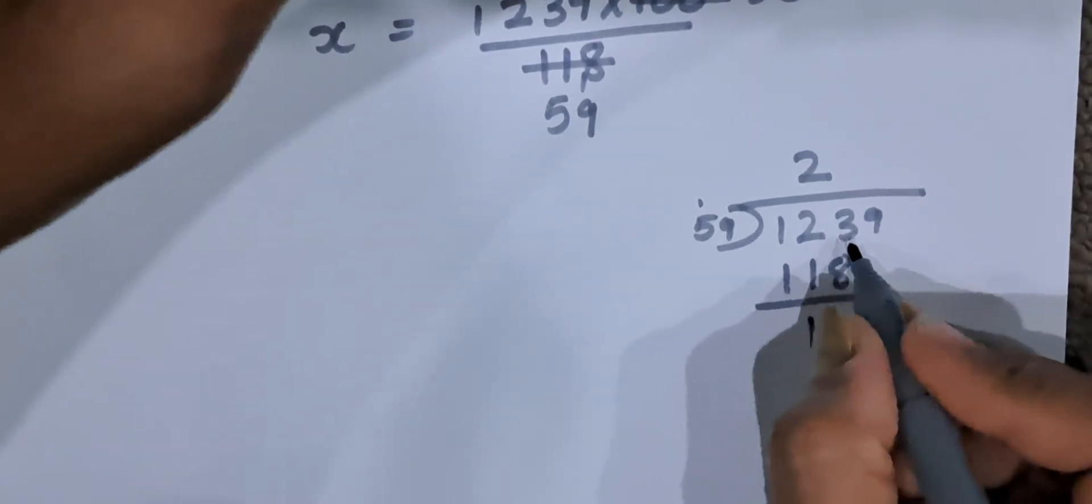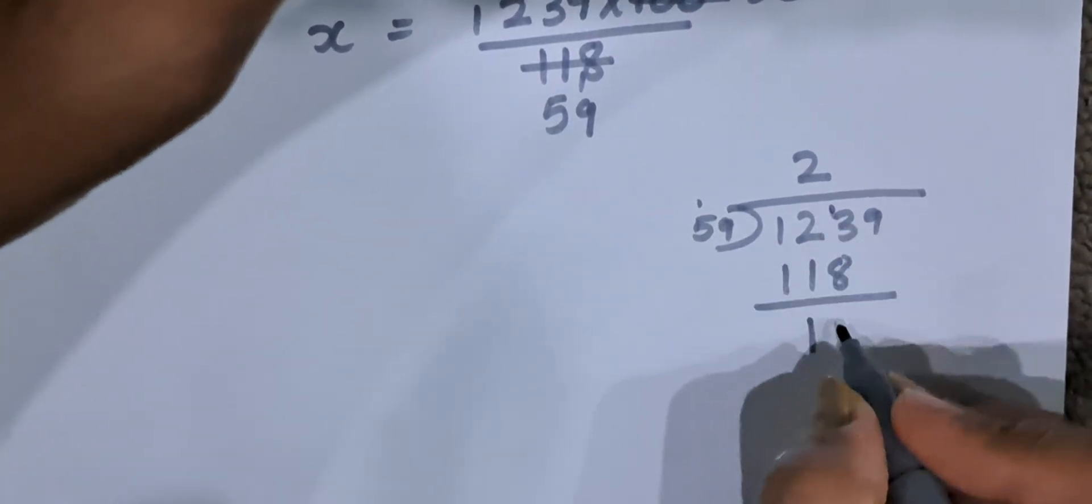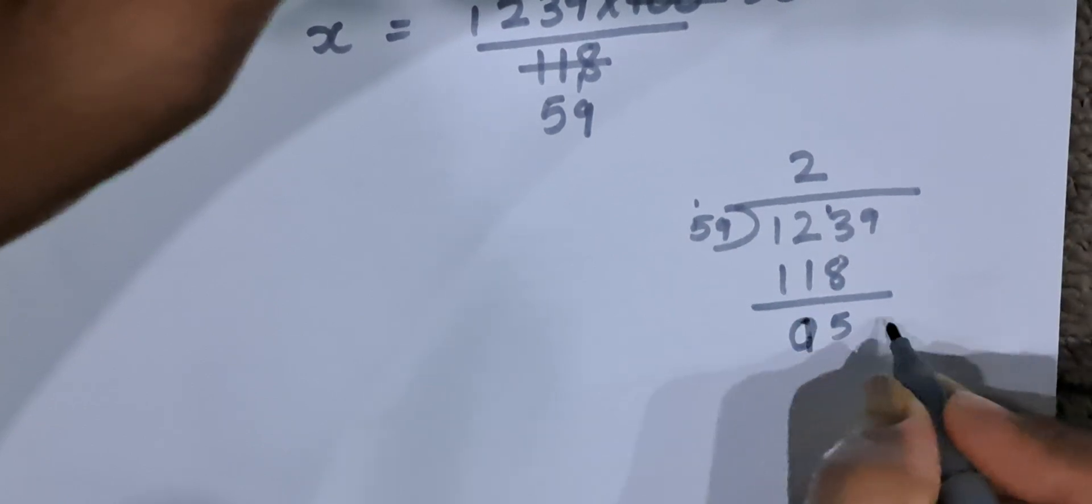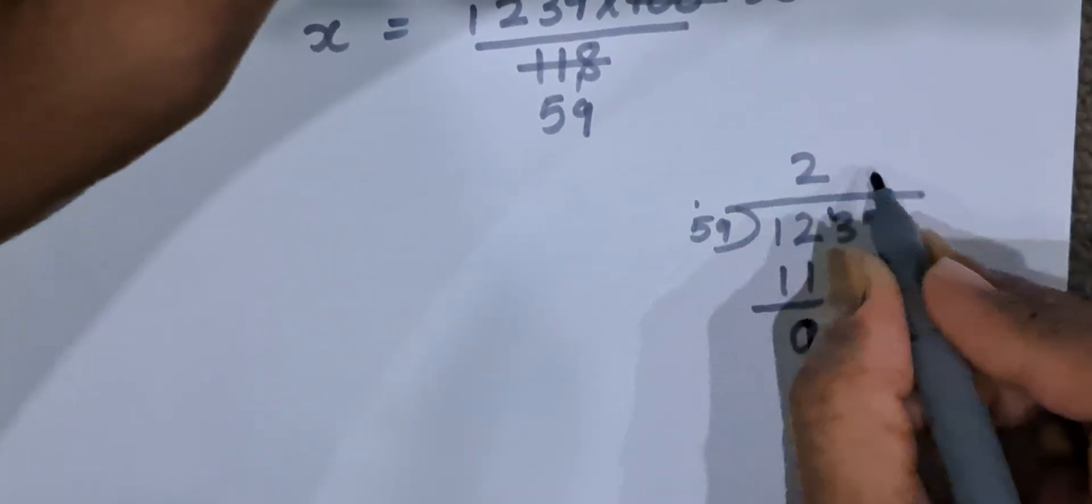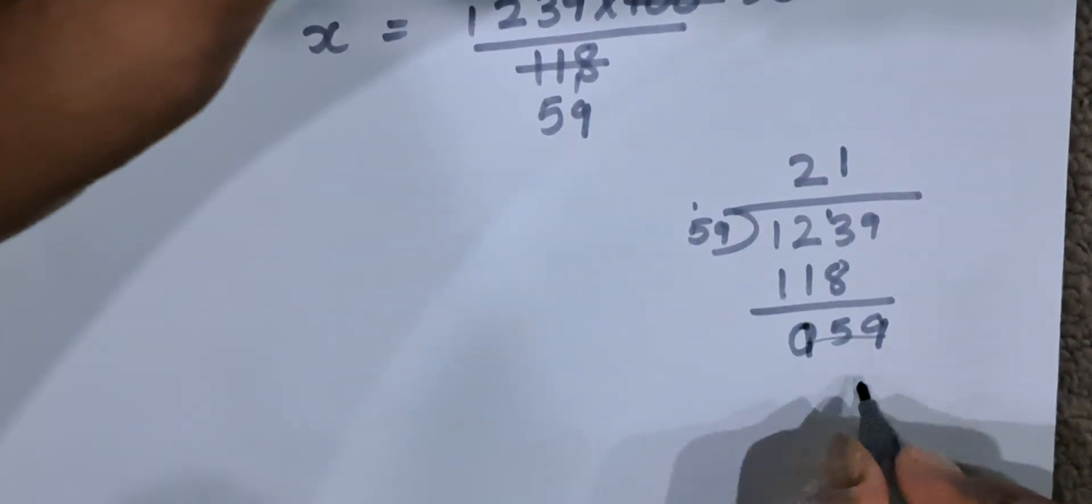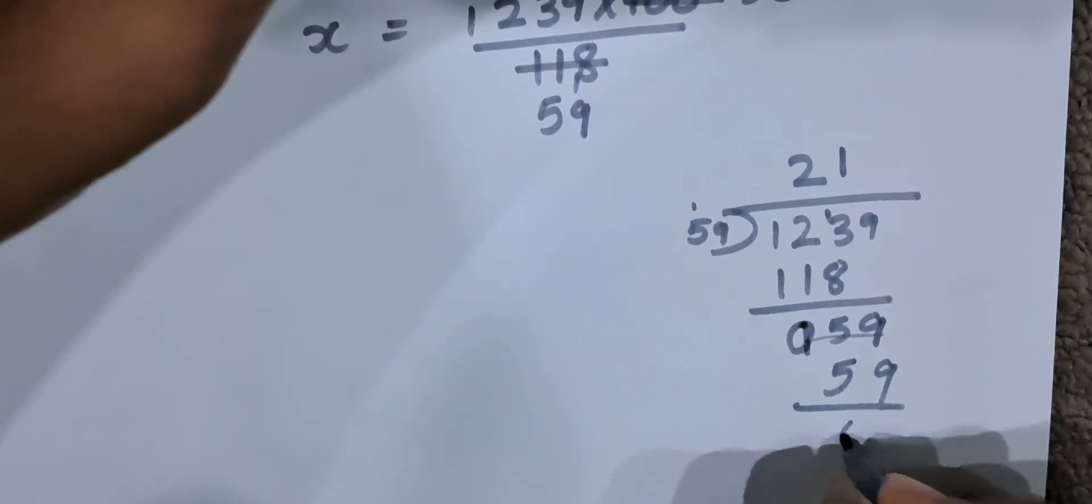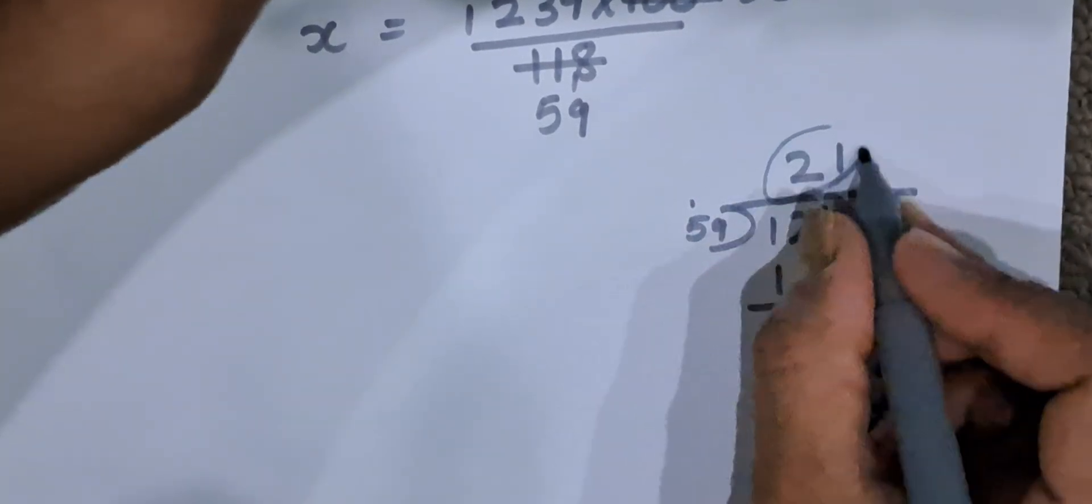Sorry, it will be 13 minus 8 is 5, it will be 059. So it will be 59. 59 times 1 is 59. That is 06. So the answer we get is 21.